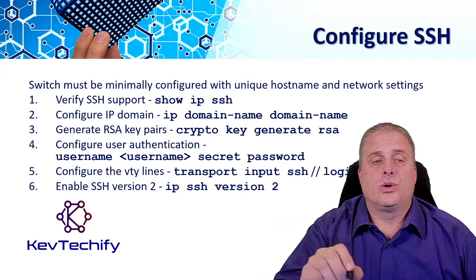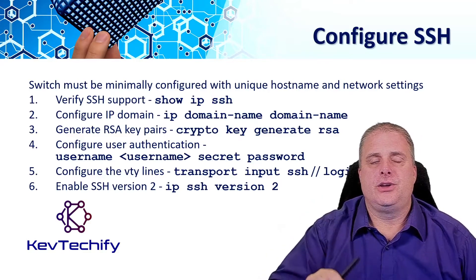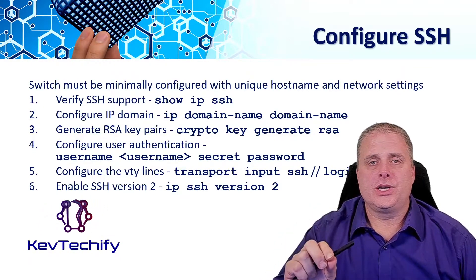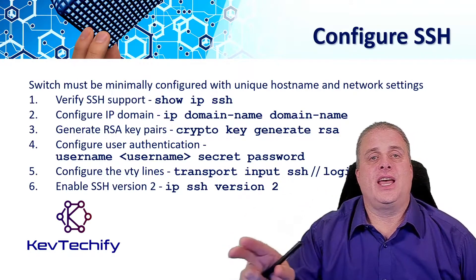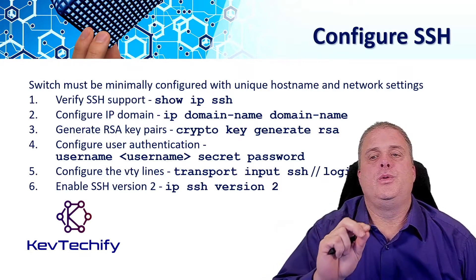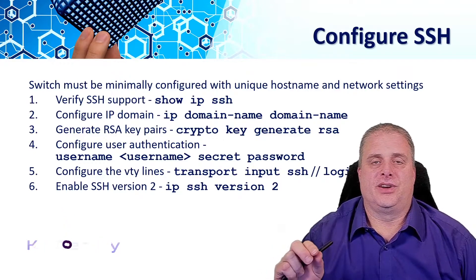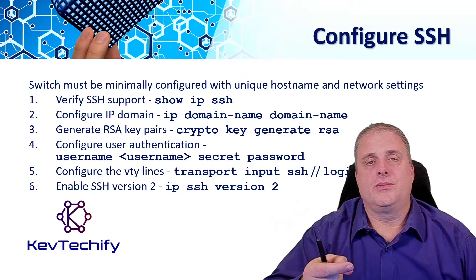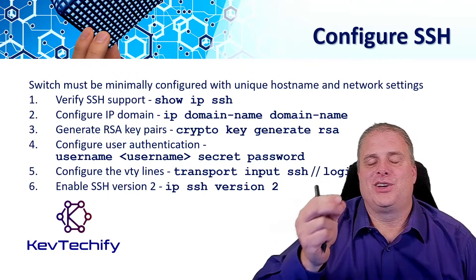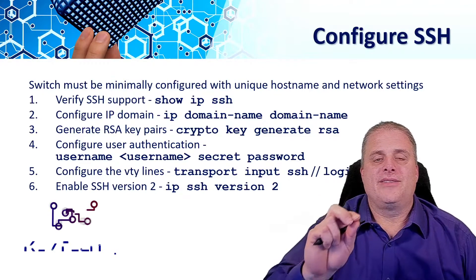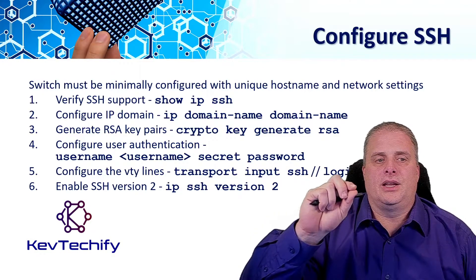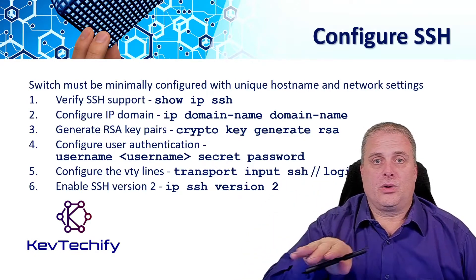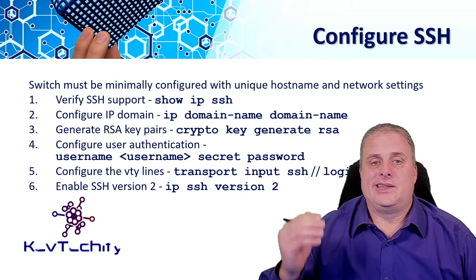To configure SSH on your switch, a couple of things need to happen first. You need to make sure it has a unique hostname on your network — if you leave all your switches with the default name 'switch,' you can configure SSH on the first switch, but when you go to the second one with the same name, it's going to give you an error. You also need the network settings configured: give your management VLAN an IP address, subnet mask, and if connecting to different networks, set your IP default gateway. Once configured, you can do a show ip ssh command to verify it supports SSH — if it lists out what it supports, it's there; if not, SSH is not supported.